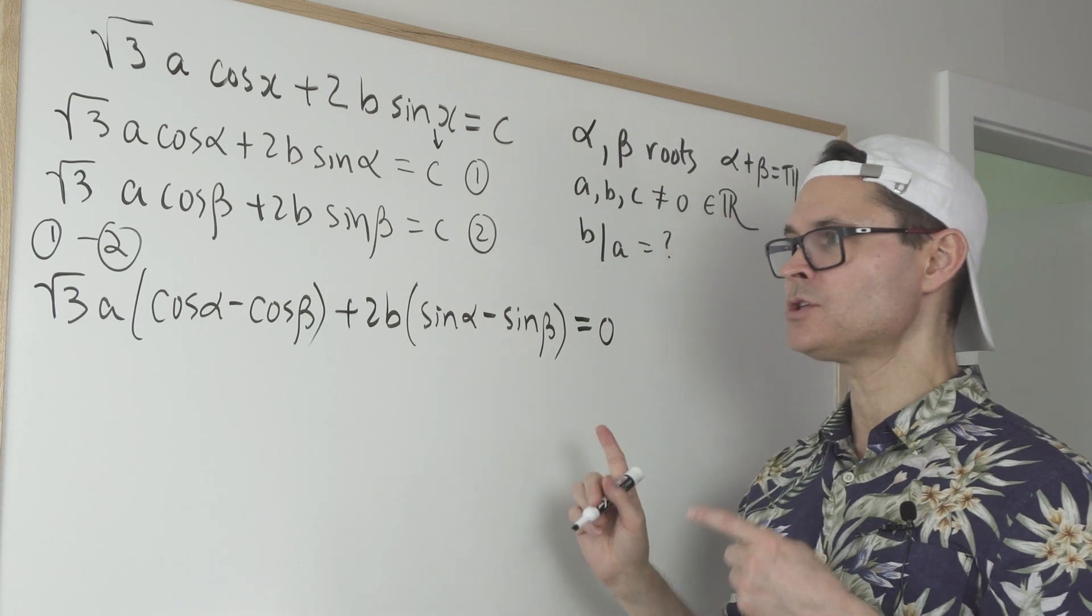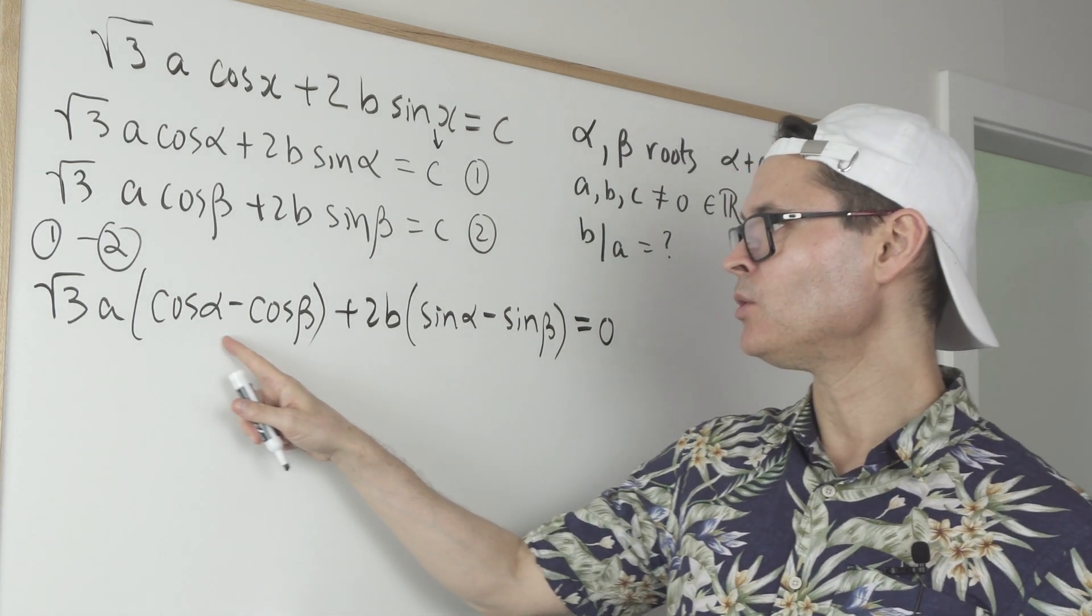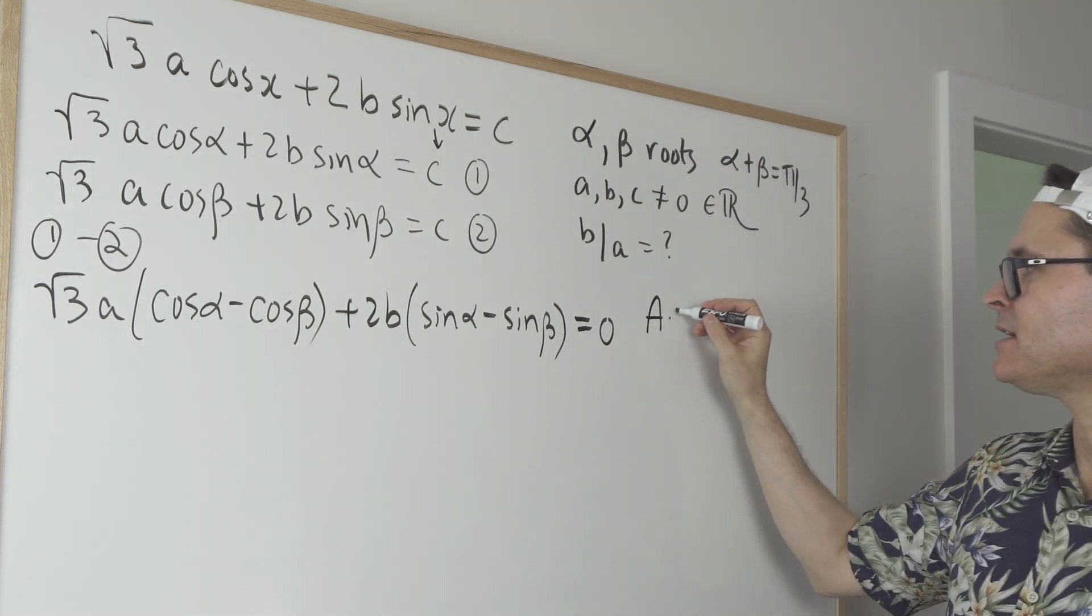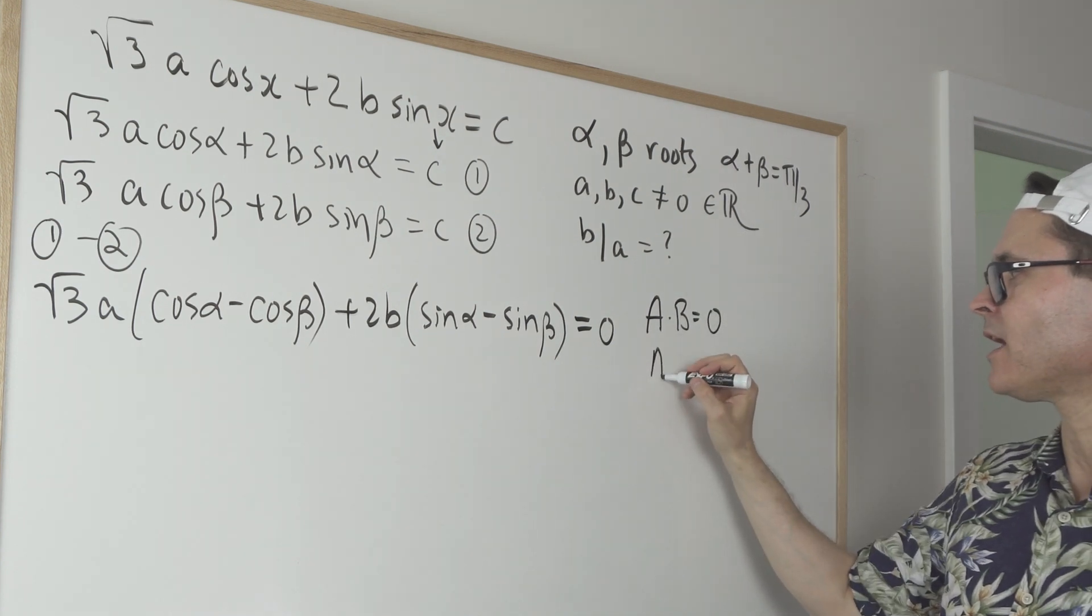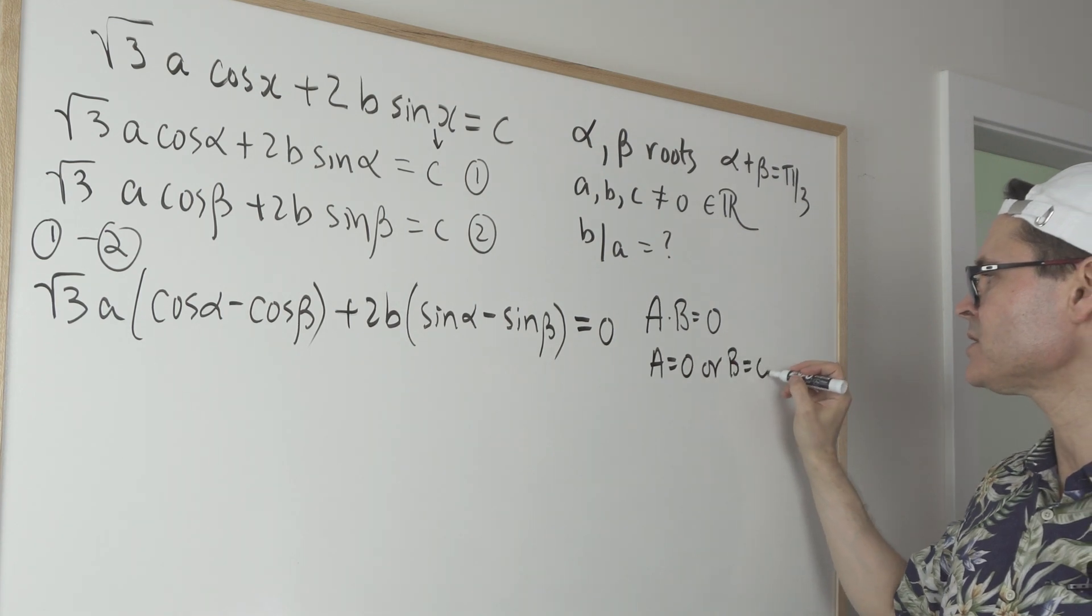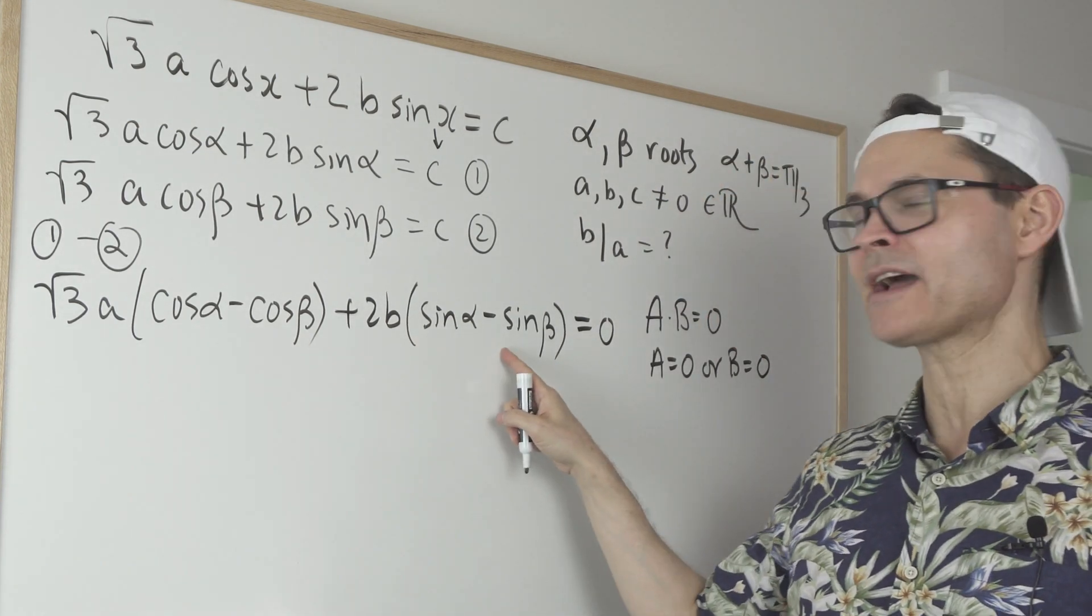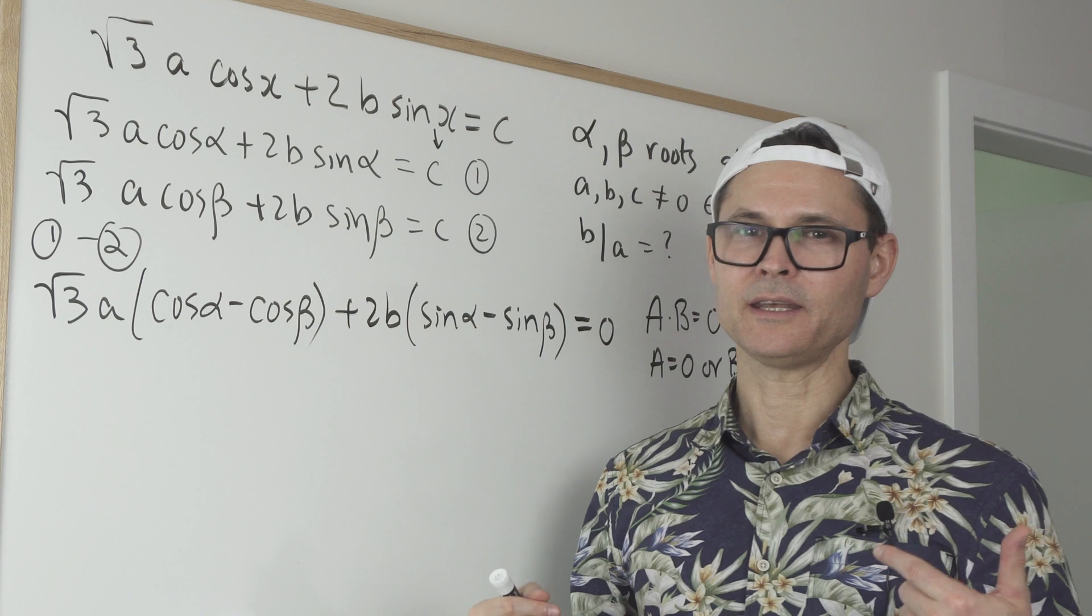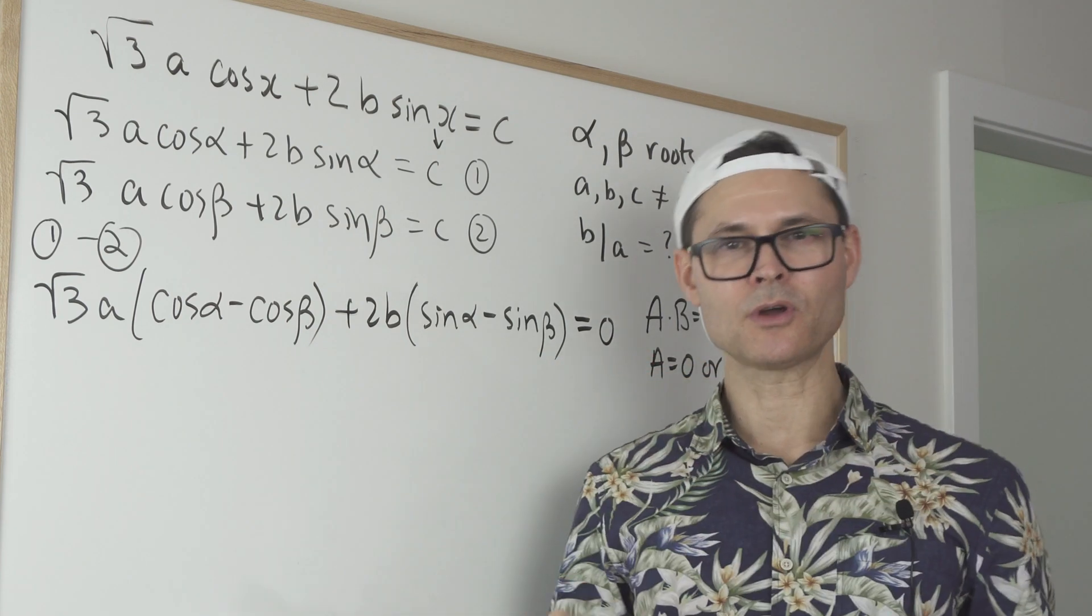Okay, so once we get to here, we have this new equation. And what I'm noticing is I have one, two terms equals zero. And I kind of like to use this idea that A times B equals zero, that implies what? That either A is equal to zero or B is equal to zero. So the way to go here would be to probably convert these subtraction trig identities to product trig identities. Because when you have things being multiplied together, you can start pulling out common factors.